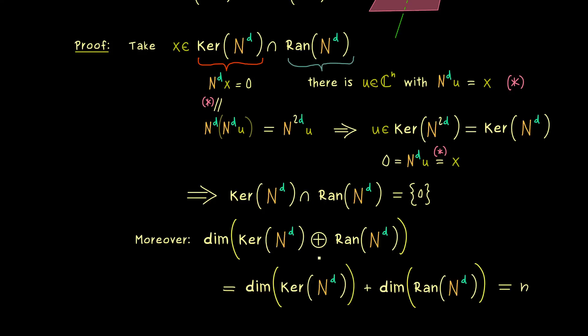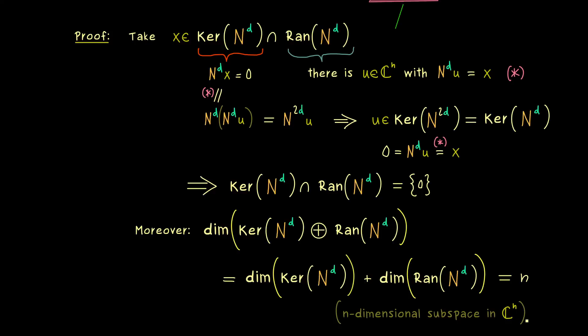So in our case, this is just given by n. So this implies that our direct sum here is an n-dimensional subspace in C^n. And there you know that the only n-dimensional subspace in C^n is C^n again. And this is what we wanted to show. This direct sum is equal to the whole space.